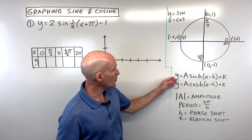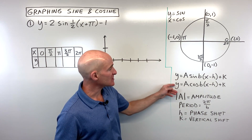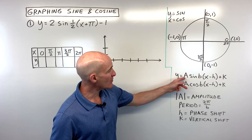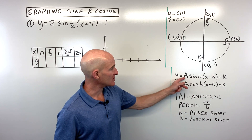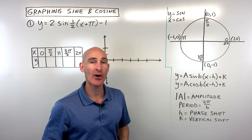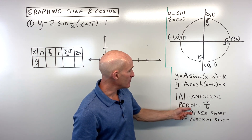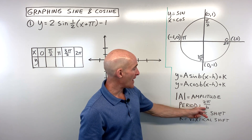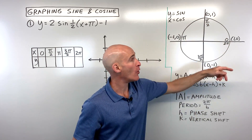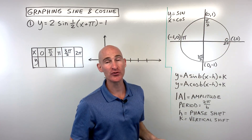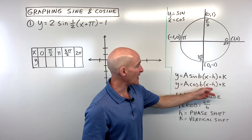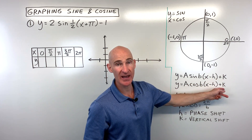We're going to be working with the sine and cosine in this general form: a·sin(bx - h) + k. The absolute value of the coefficient in front of the sine or cosine represents the amplitude — that's how high the waves are. The period is 2π divided by b, so normally one period or one cycle of the graph is once around the unit circle — two pi. The phase shift is the quantity grouped with x, and the vertical shift is this k value.